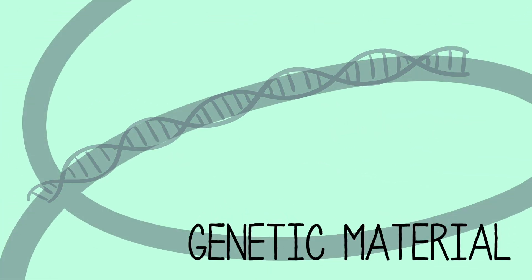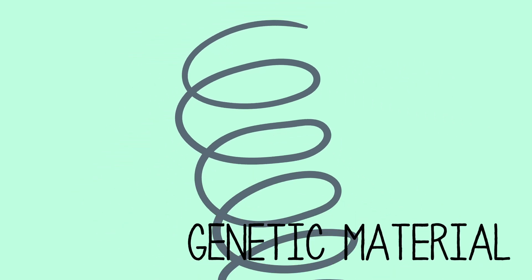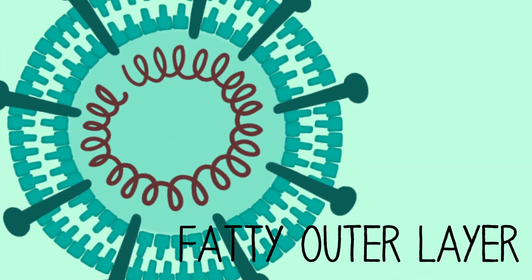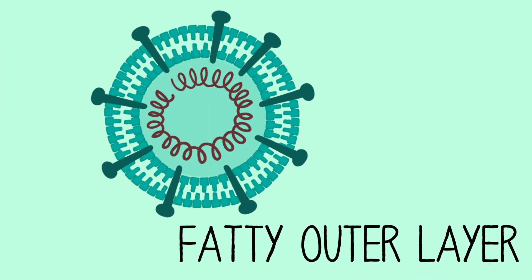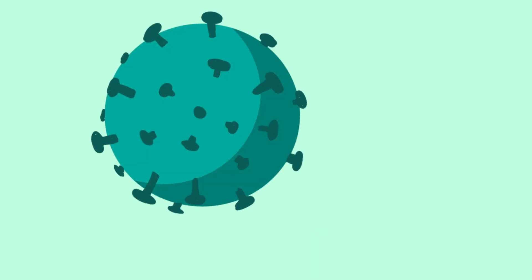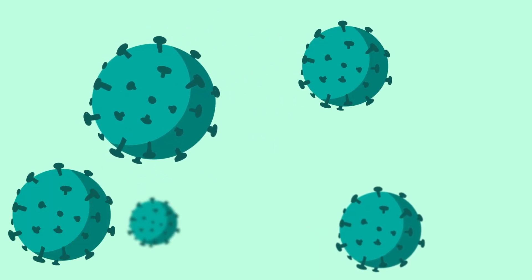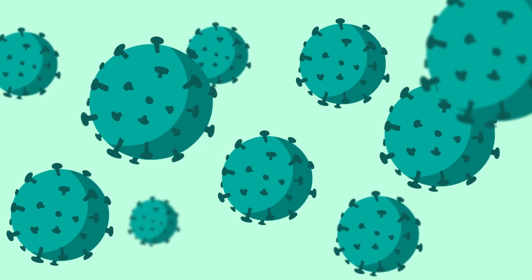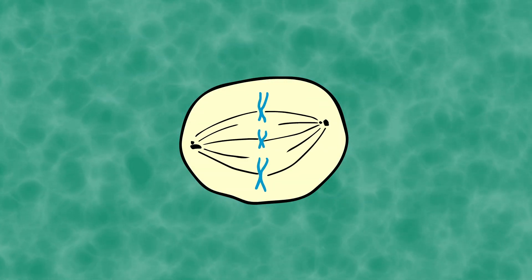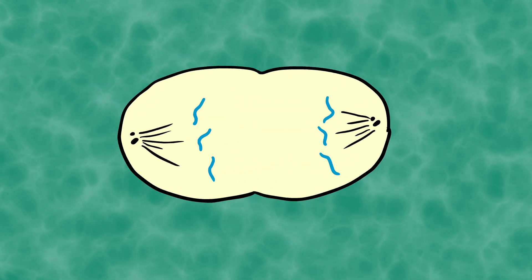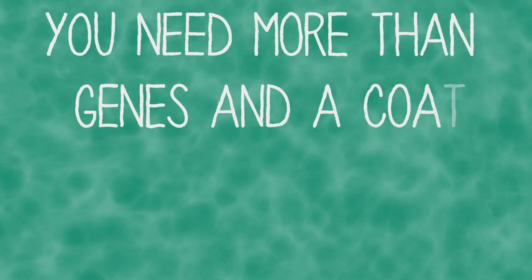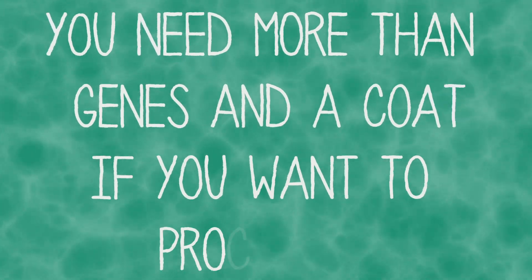All viruses consist of a bit of genetic material wrapped up in a protein case. Some have a fatty outer layer too, like the coronavirus. The goal of a virus, like any living thing, is to reproduce. But unlike living things, it doesn't have its own molecular machinery to do so. You need more than jeans and a coat if you want to procreate.